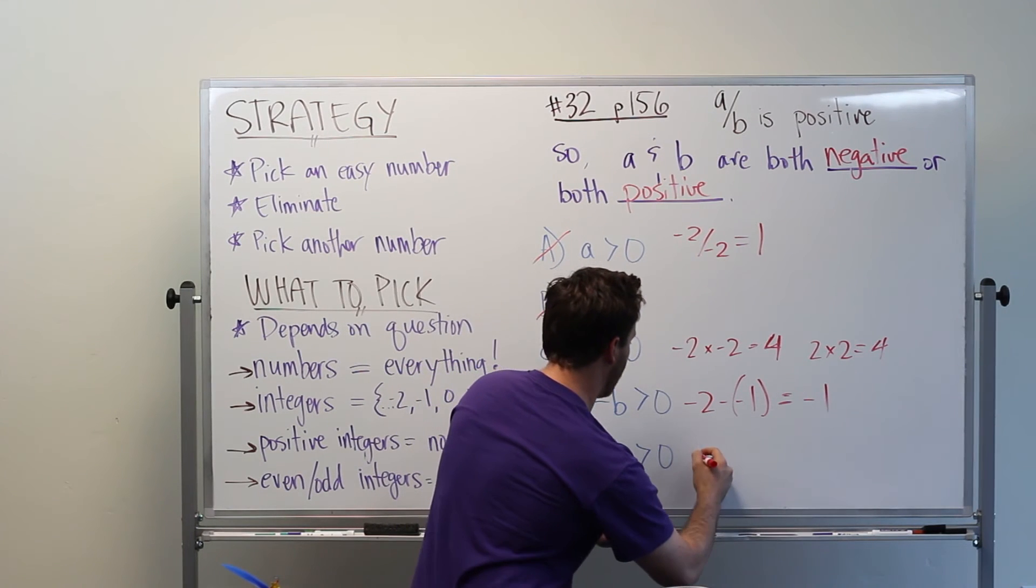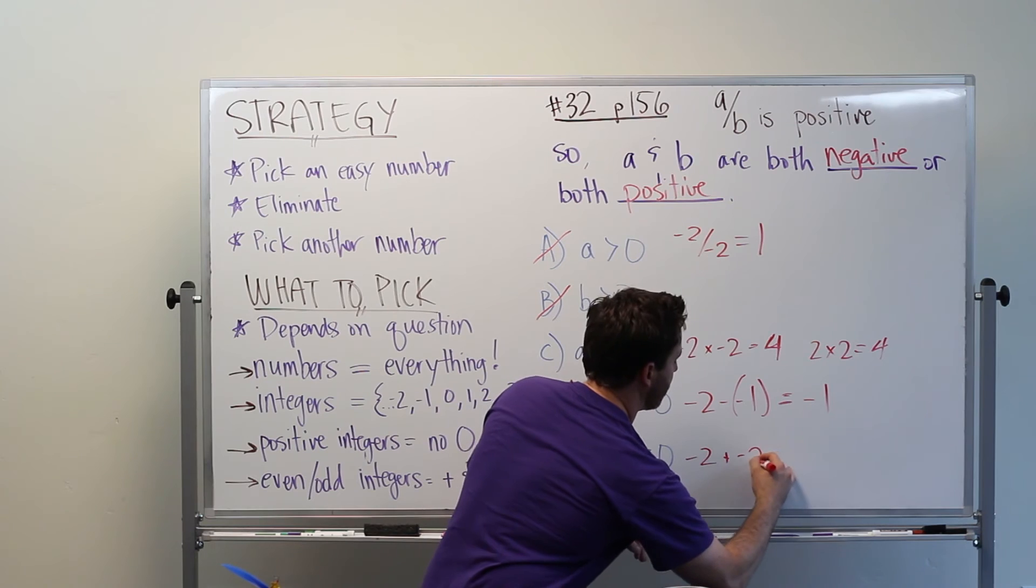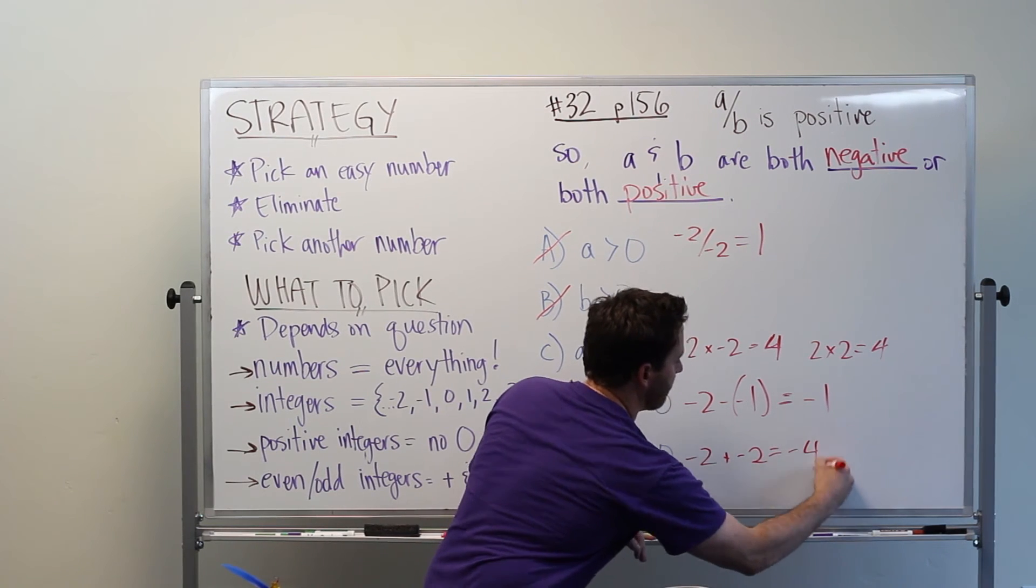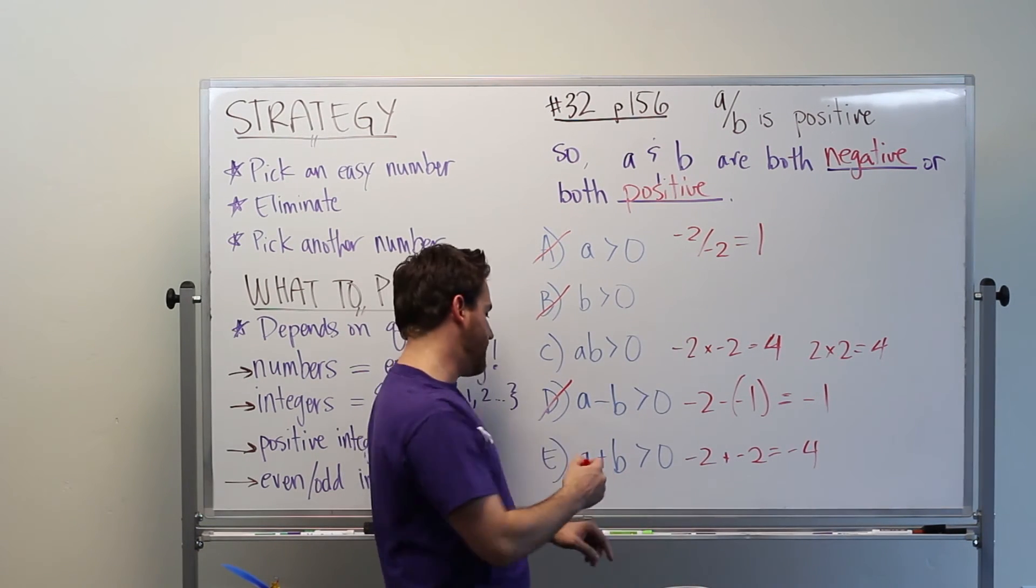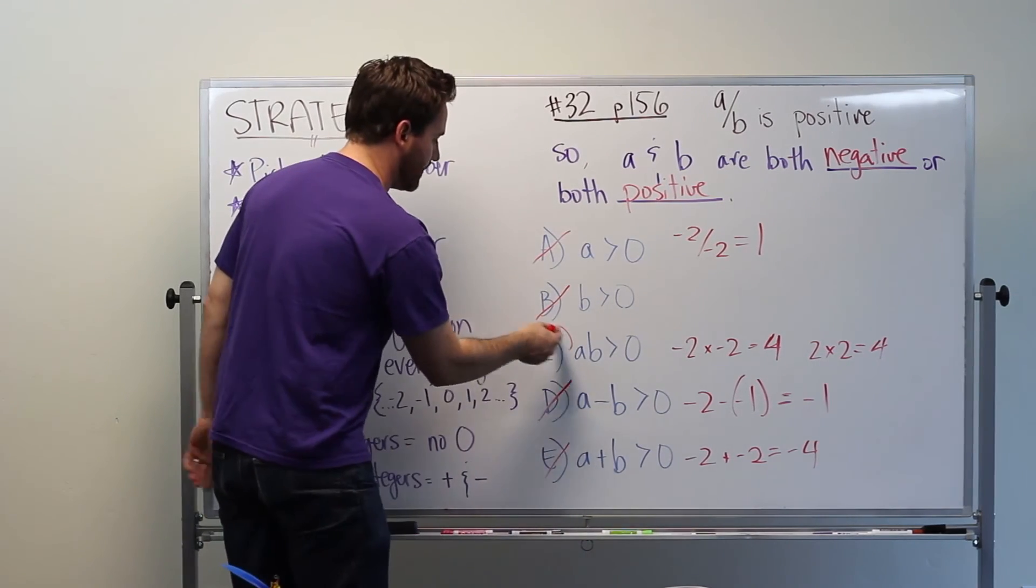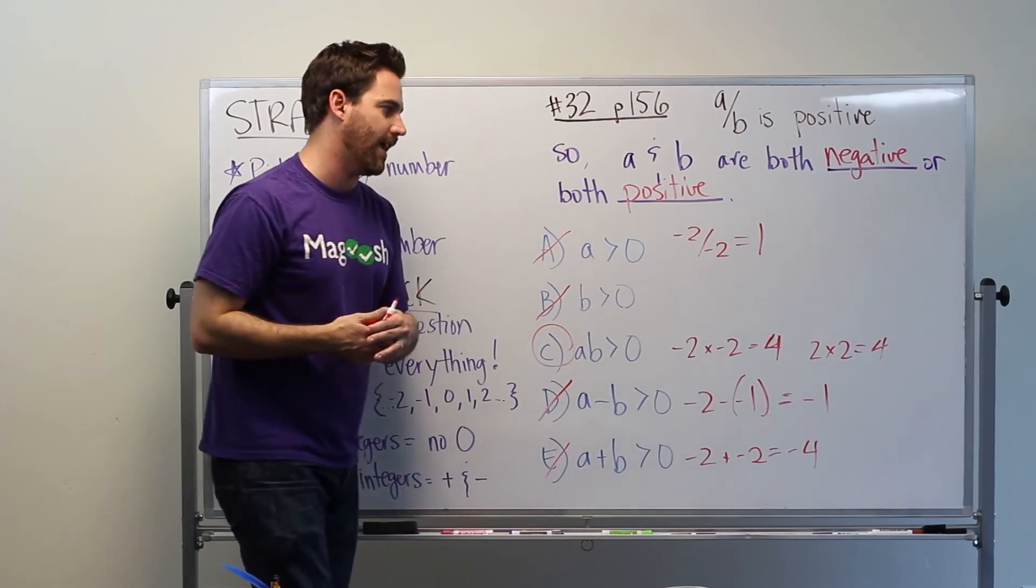A plus B. So again, we have negative two plus negative two. That's going to be negative four, which is not greater than zero. So we can eliminate E as well. And C is our correct answer choice.